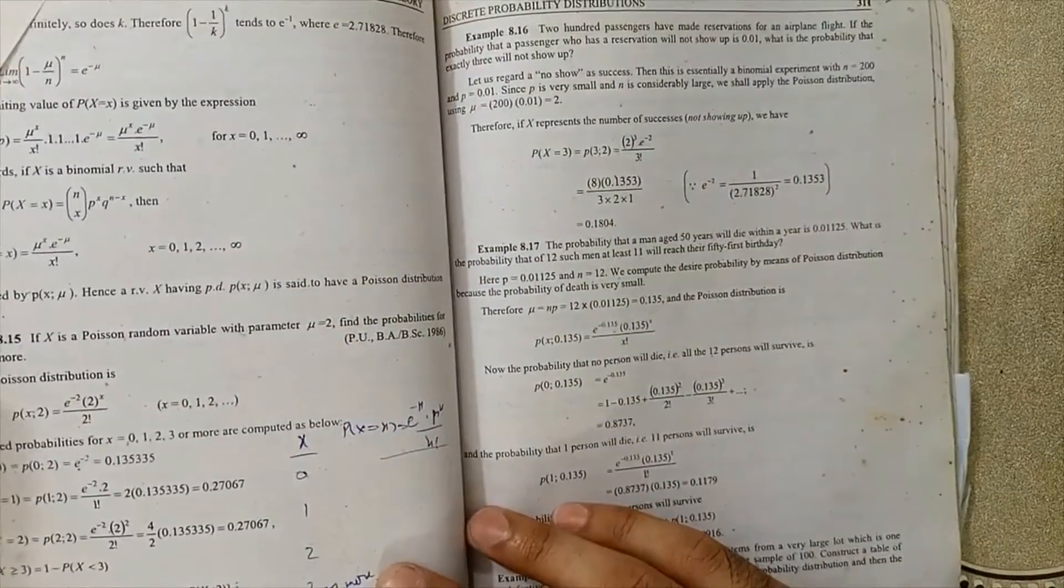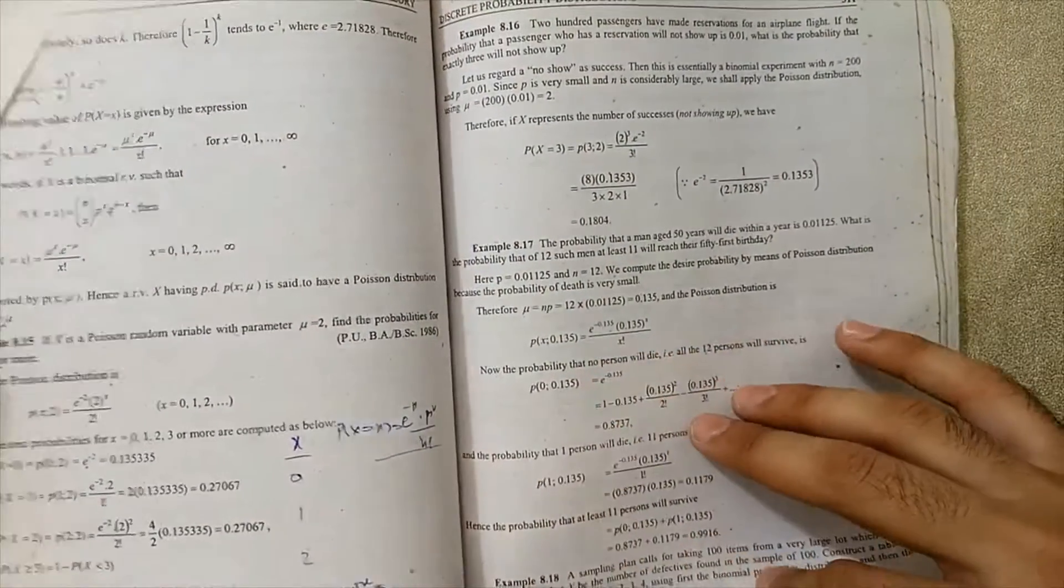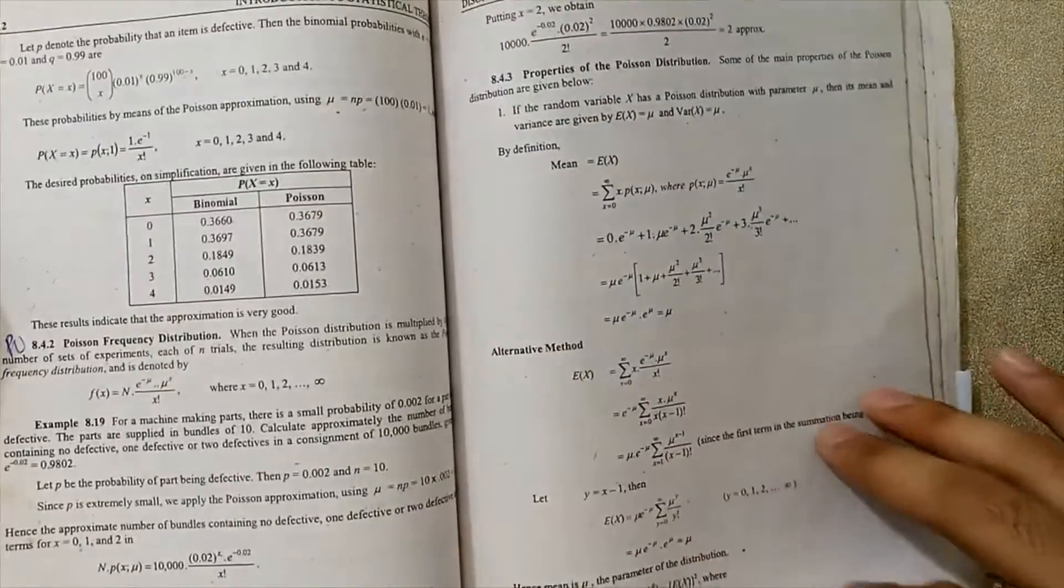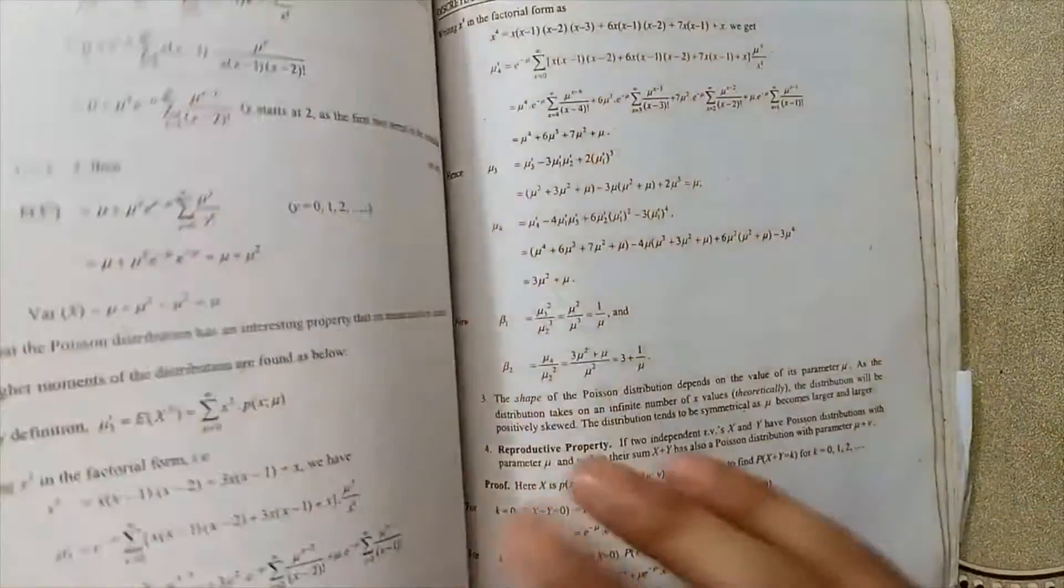Next, Poisson distribution is a very important topic. Example 8.15 is very important. Poisson frequency distribution is also an important topic.